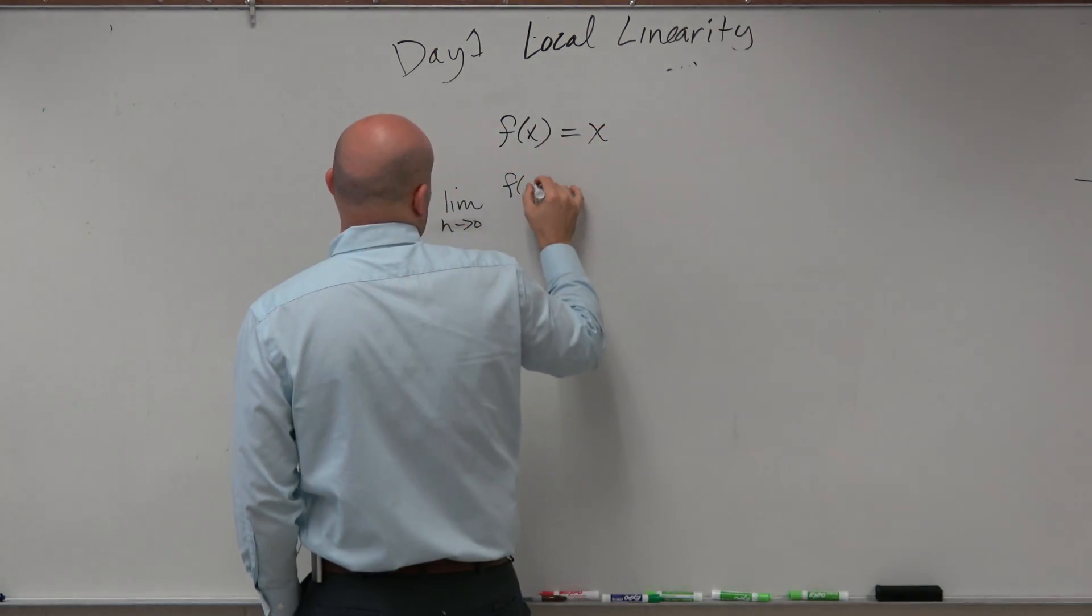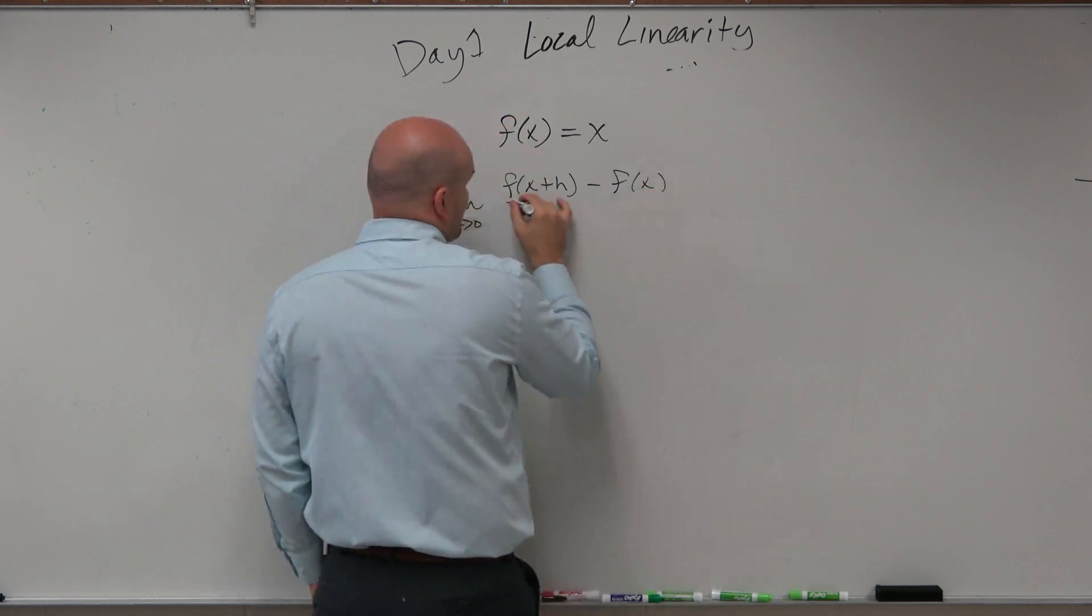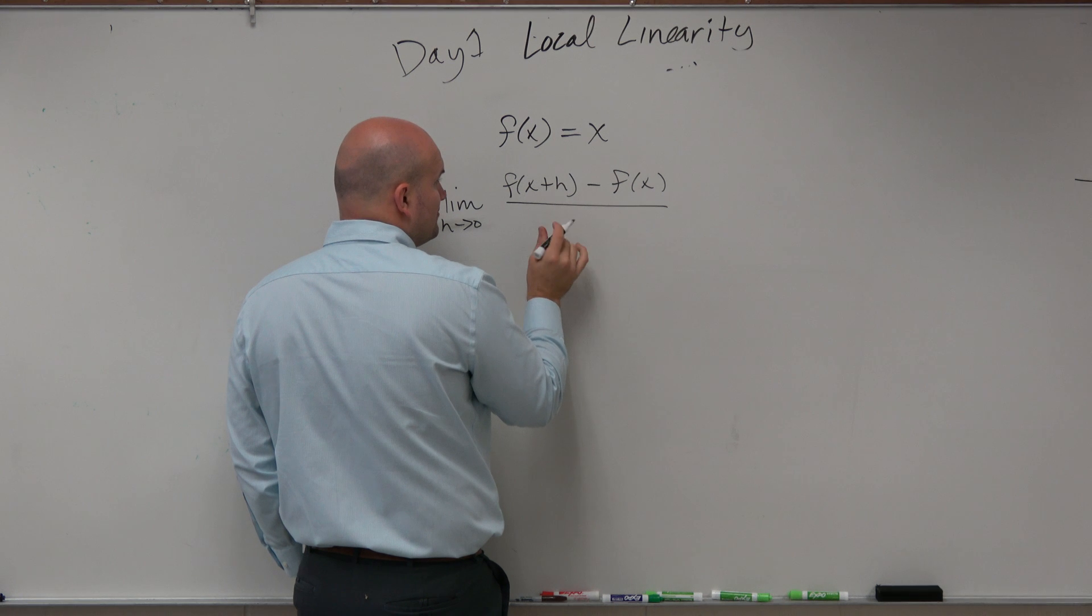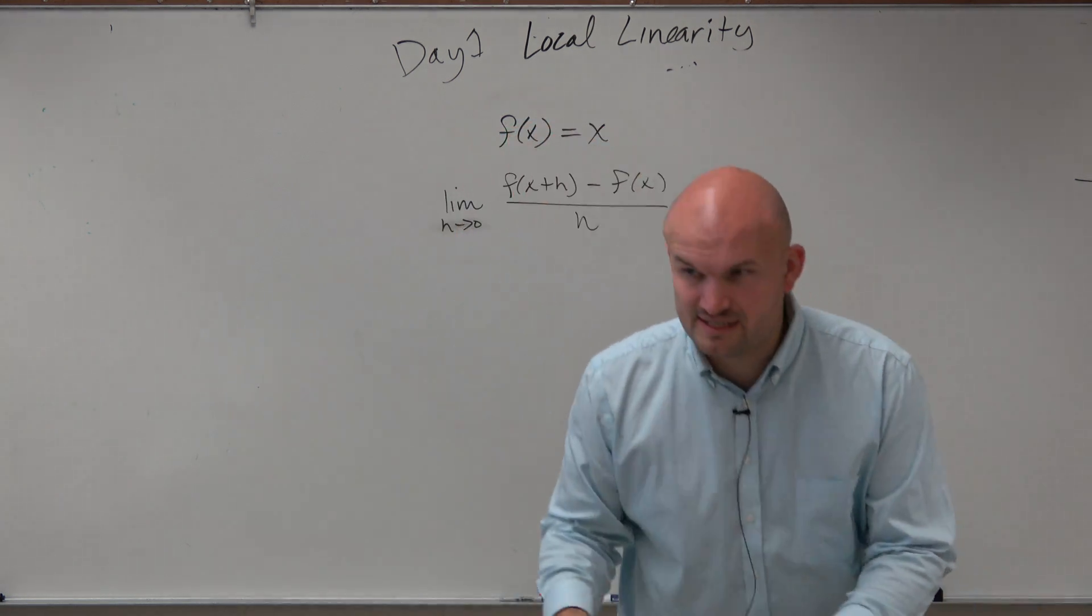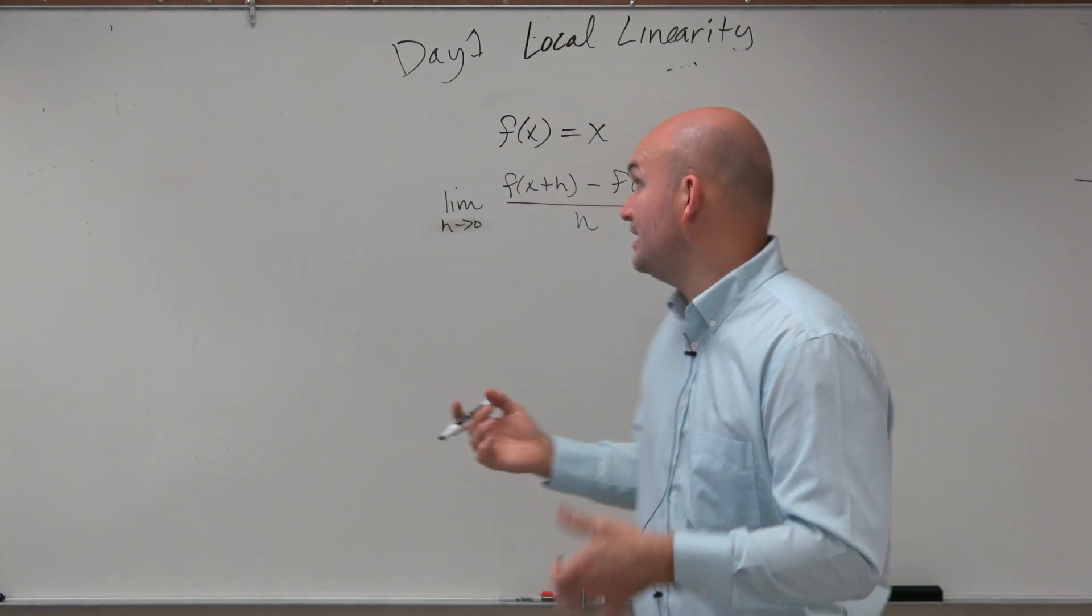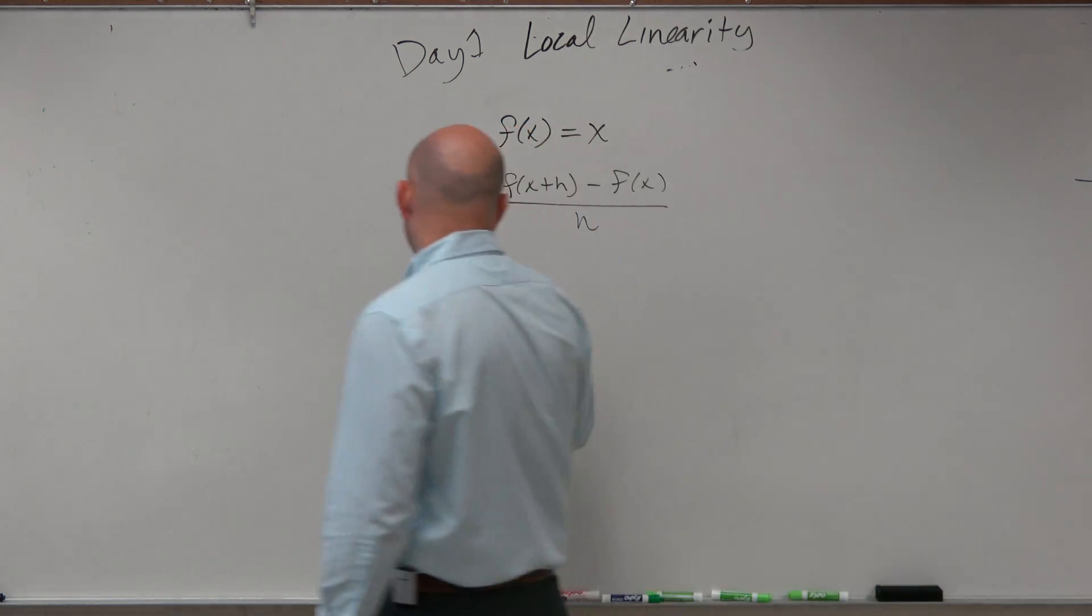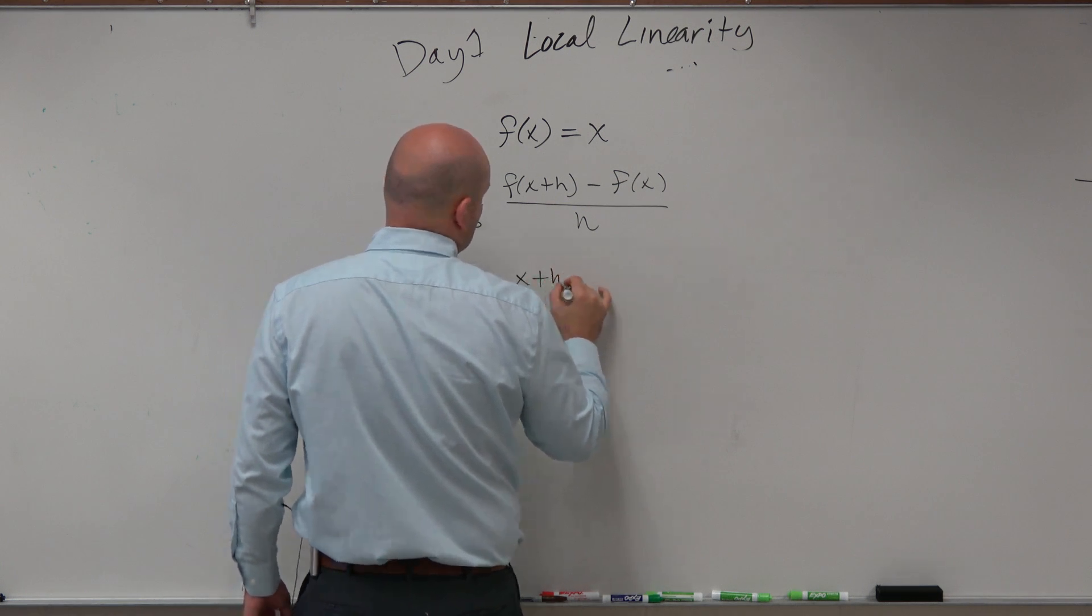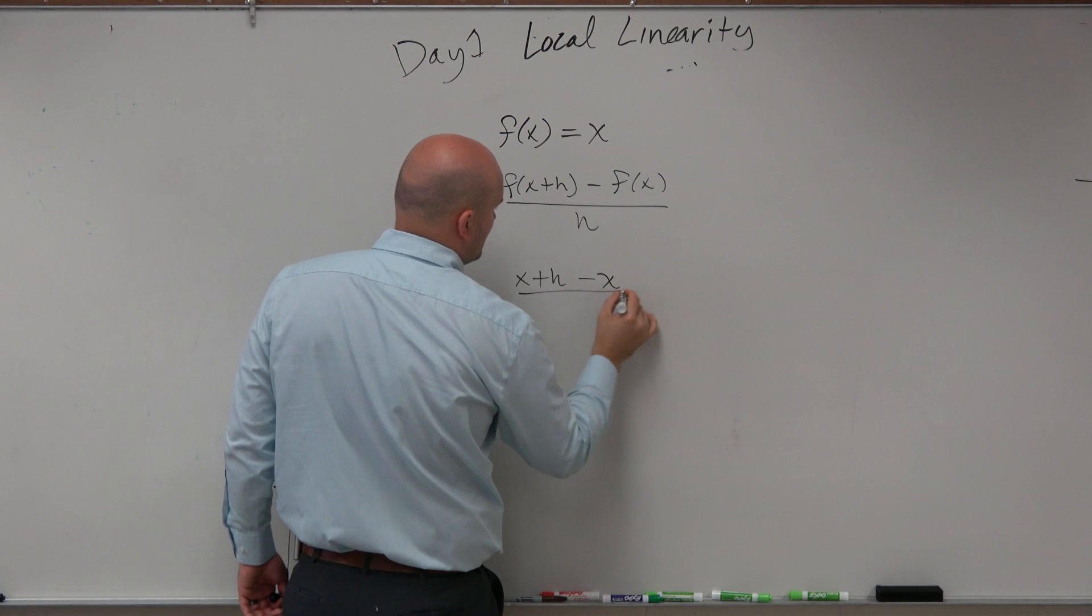Remember, we have f of x plus h minus f of x all over h. So this is a very basic example. However, if I'm going to plug in x plus h into this function, I am going to now get out x plus h minus f of x. f of x is just equal to x all over h.